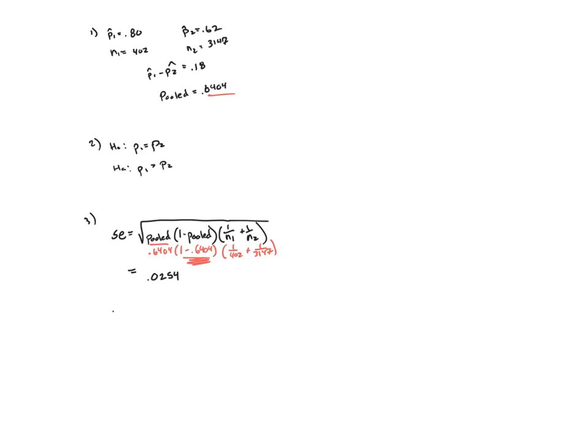After I find SE, the next thing I need to do is find my test statistic. In this case, it's going to be Z because I'm using proportion and not averages. My Z-score for a two-proportion hypothesis test is P1-hat minus P2-hat, that difference, divided by SE.